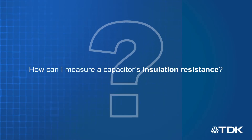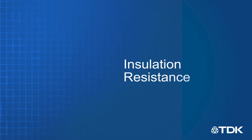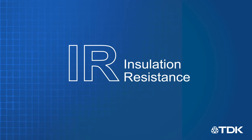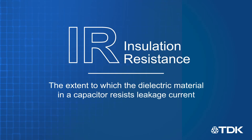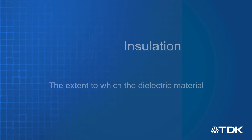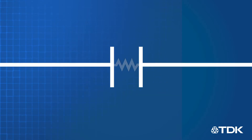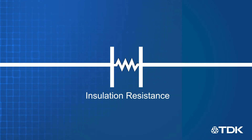Insulation resistance, or IR, is the extent to which the dielectric material in a capacitor resists leakage current. In other words, it is the resistance of the dielectric material itself.